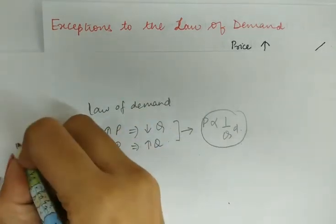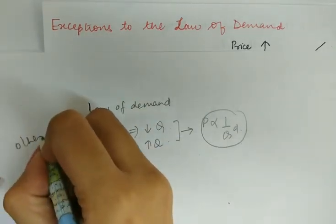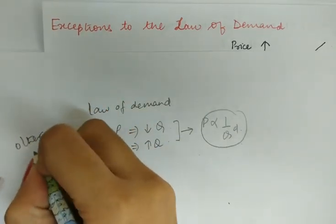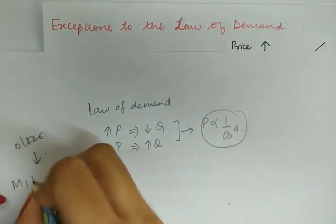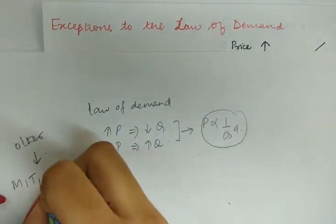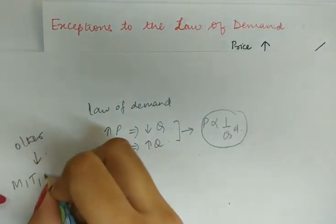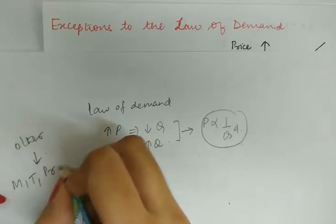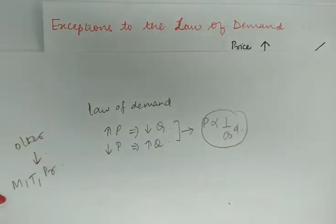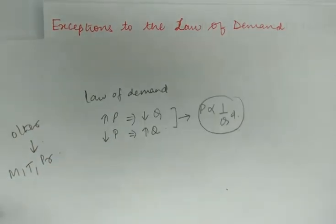Other things being equal refer to the income of the consumer, the taste and the preferences of the consumer, and the price of related goods.